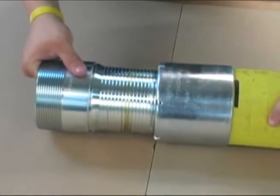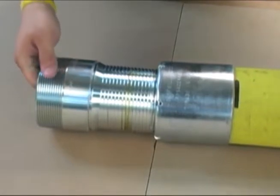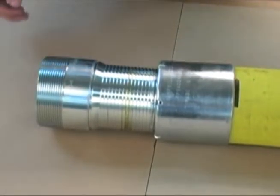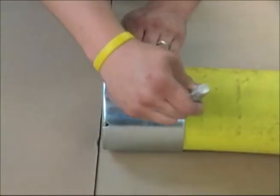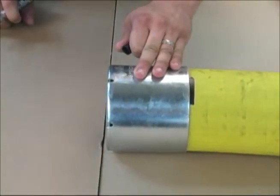After the fitting has been started in the hose, make certain that the ferrule is fully bottomed on the end of the hose. Check to see that the ferrule aligns with the mark made initially.